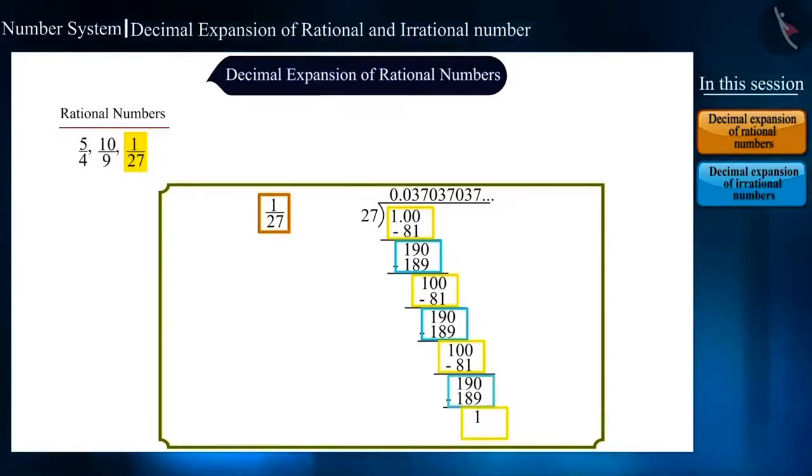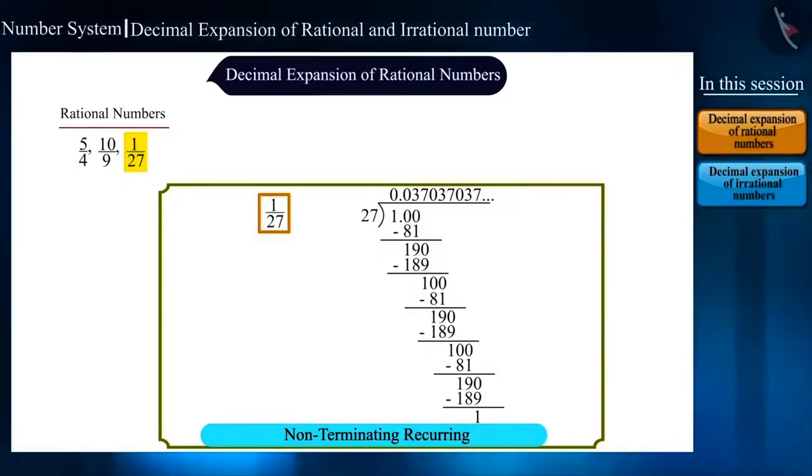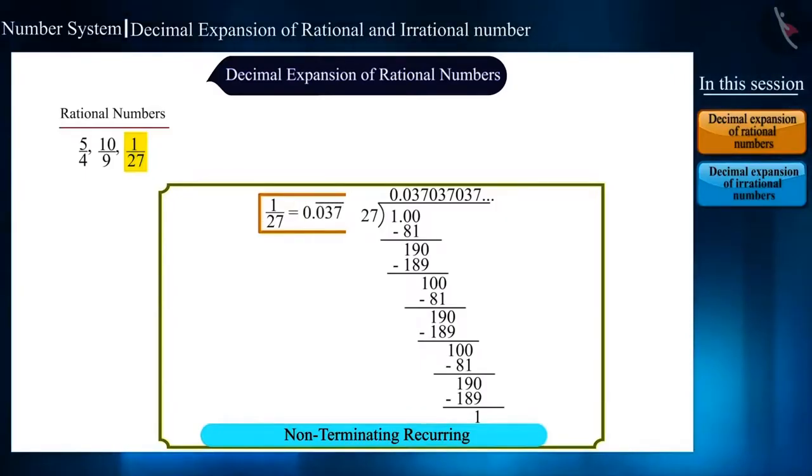And now if we look at the quotient, we realize that just like there is repetition in the remainder, there is a repetition of 037 group of digits in the quotient after the decimal point. So can we call this decimal expansion also non-terminating or recurring? Yes. And we will write it as 0.037 with a bar.